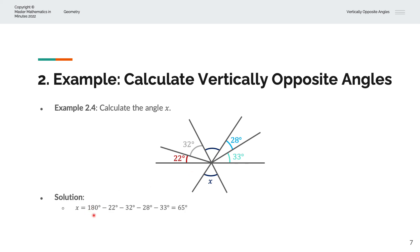which is 180 degrees, minus 22 degrees, which is that angle, minus 32 degrees, which is that angle, minus 28 and 33, which are these two angles here. And we have X is equal to 65 degrees.